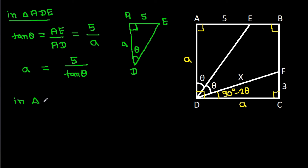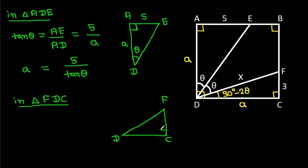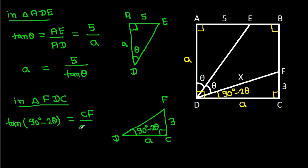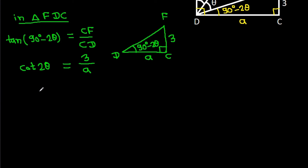In triangle FDC: this angle is 90 degrees, and this angle is 90 degrees minus 2 theta, so this angle will be 2 theta. Then tan(90 degrees minus 2 theta) equals CF over CD. That gives cot(2 theta) equals 3 over A, so tan(2 theta) equals A over 3.